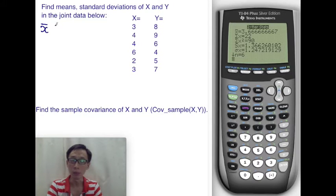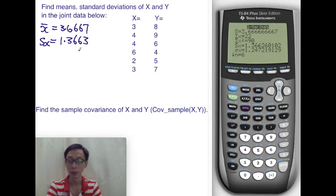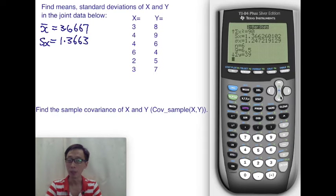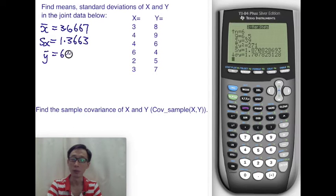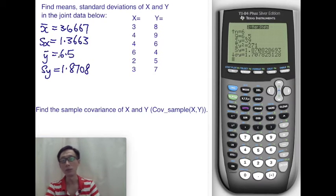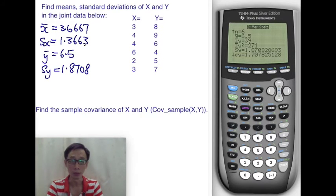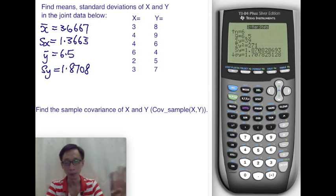So performing two variable statistics allows us to quickly copy down the outcomes. The sample mean for x is 3.6667. The sample standard deviation for x will be 1.3663 to 4 decimal places. The sample mean for y is going to be 6.5 and then sample standard deviation for y is 1.8708. So you could have gotten these separately with two presses of the one variable statistics. One time for L1 and then another time for L2. That would have been fine as well.